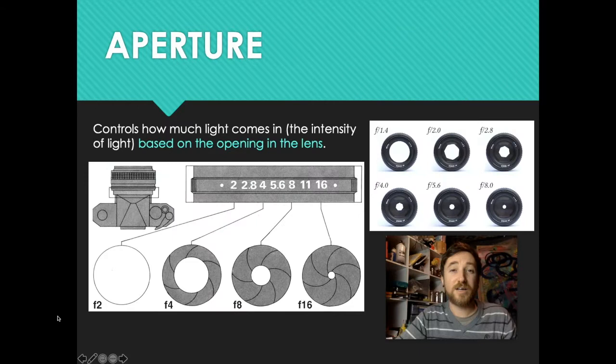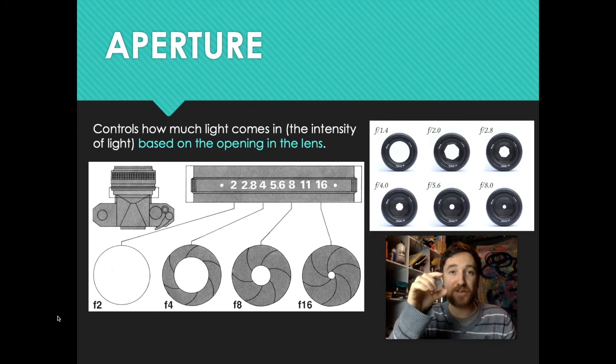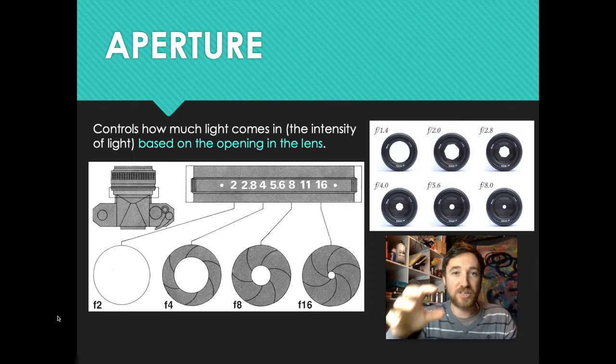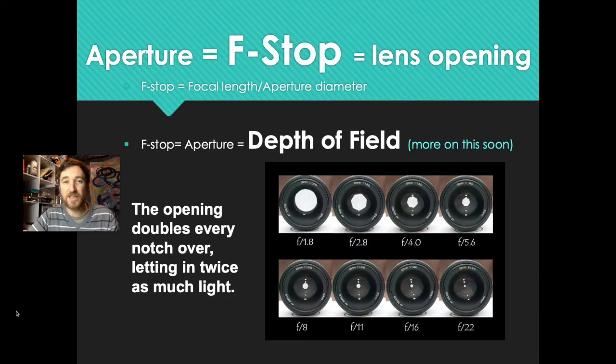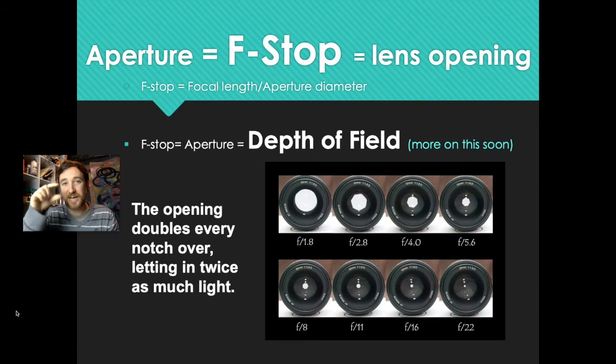Aperture allows light into the camera based on the opening in the lens — how big or small that opening is. As you change your aperture, the opening will get bigger, allowing more light to come in. If you close it, it shuts off the light. Aperture is equal to f-stop, so that letter F that comes before the numbers is really important to be aware of. It's also equal to the lens opening — the f-stop equals the focal length or aperture diameter.